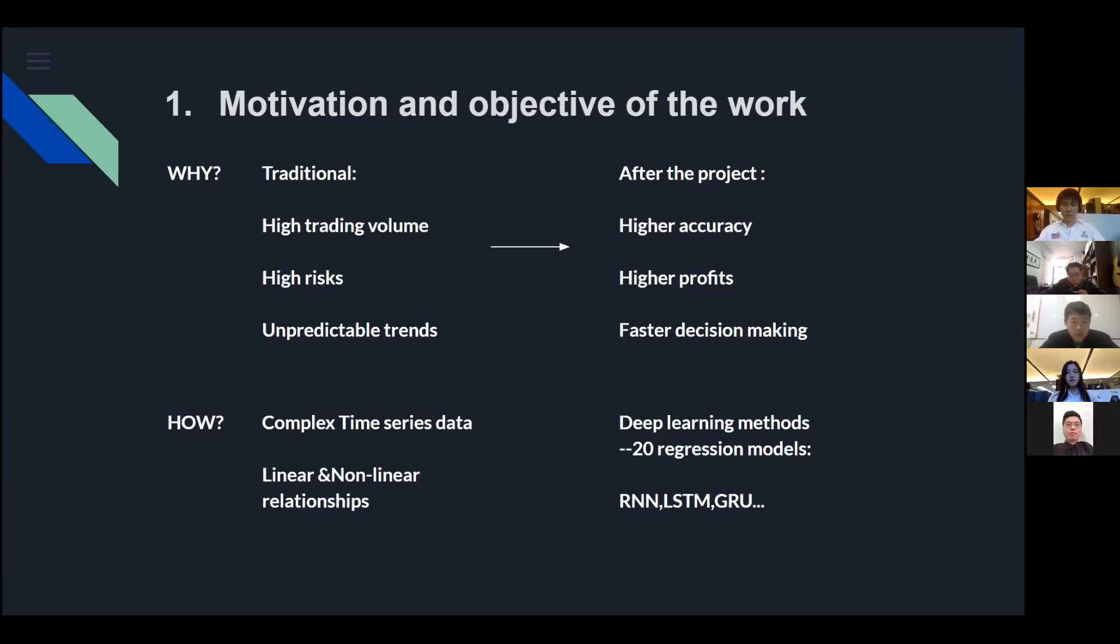Therefore, with the help of deep learning methods and trading strategy, our project aims to get a higher accuracy of prediction trend, higher profits, and faster decision of forex trading. Since the forex data are time series data with linear and non-linear relationships, we use 20 deep learning regression models like RNN, LSTM, as well as GRU to predict the trend.